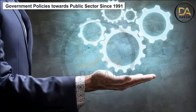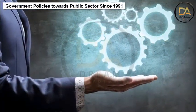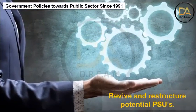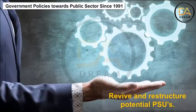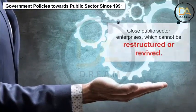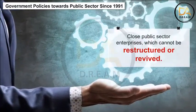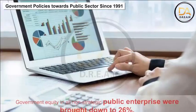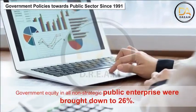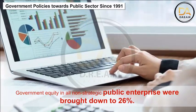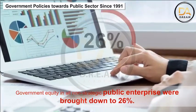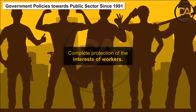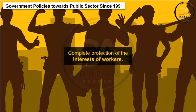Government policies towards public sector since 1991: revive and restructure potential PSUs; close public sector enterprises which cannot be restructured or revived; government equity in all non-strategic public enterprises was brought down to 26%; and complete protection of the interests of workers.